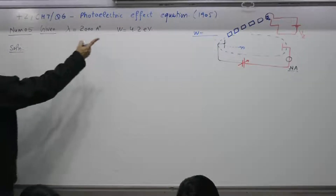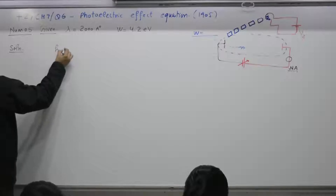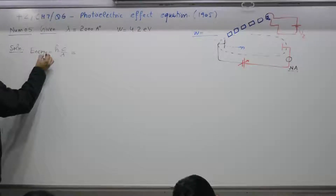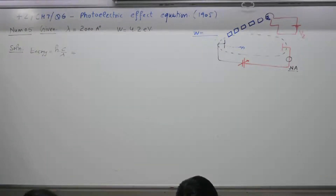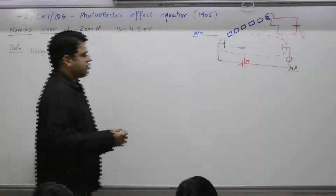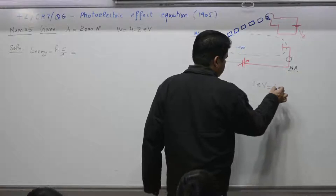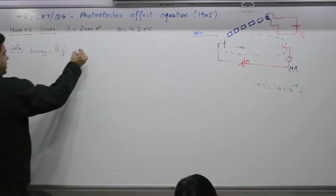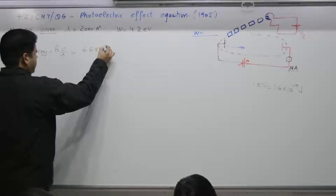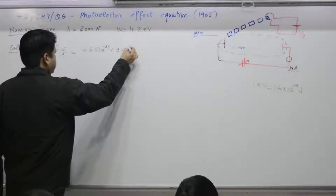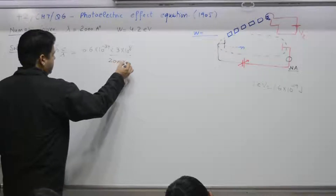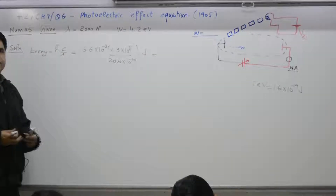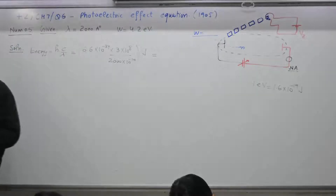First step: find the energy of the packet. Lambda is given, so energy = h·c/λ. Find energy of the packet in electron volts — first find it in joules, then convert. Recall: 1 eV = 1.6×10⁻¹⁹ J. Using h = 6.6×10⁻³⁴, c = 3×10⁸, λ = 2000×10⁻¹⁰ m, you get energy in joules, then convert to electron volts.